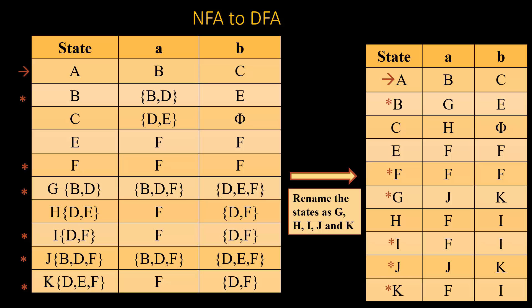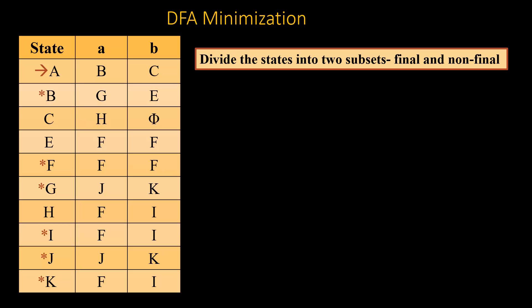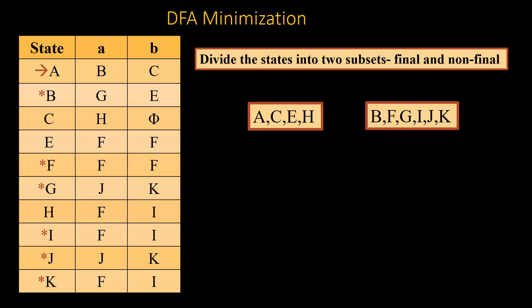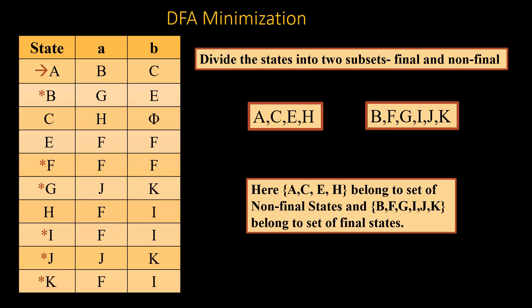The next step is minimization. To avoid confusion, we rename the states as G, H, I, J, and K. Since F and B were final states in the original NFA, all DFA states containing F or B will also be final states. In this case we have six final states and one start state, capital A. We divide all states into two subsets: A, C, E, H belong to the set of non-final states, and B, F, G, I, J, K belong to the set of final states.